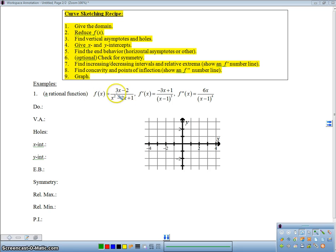What I have here is my function, f(x) equals (3x - 2) over (x² - 2x + 1). I've done f' and f'' for you, so you don't have to worry about the quotient rule. First thing, find the domain. We need to factor this out - we've got (x - 1)², not equal to 0. So the domain is x not equal to 1.